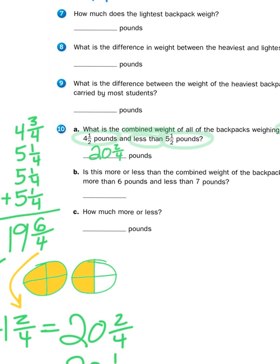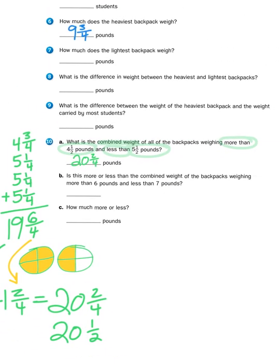Now problem 10b asks you to compare that to the combined weight of the backpacks weighing more than six pounds and less than seven pounds. So you would do the same process of counting how many backpacks fall within that smaller range, and then you would take the actual measurements and add them together, and then determine which amount was more. And then 10c asks you how much more or less - now you're going to give me the difference between the two amounts.